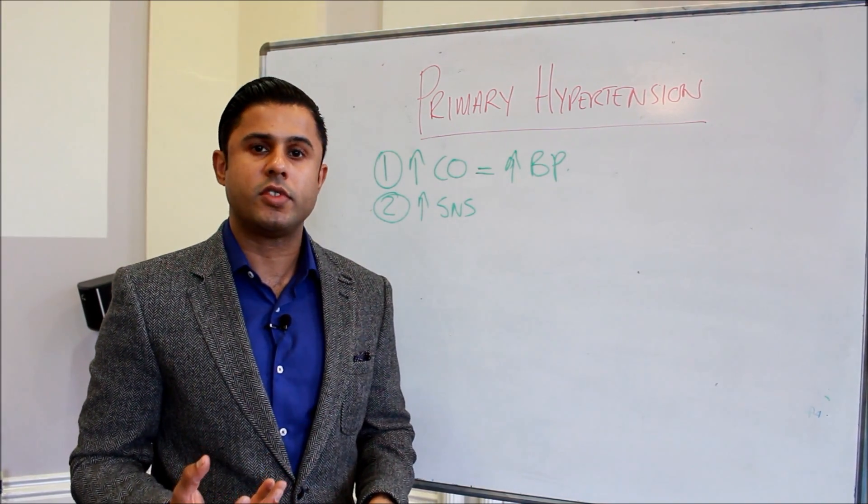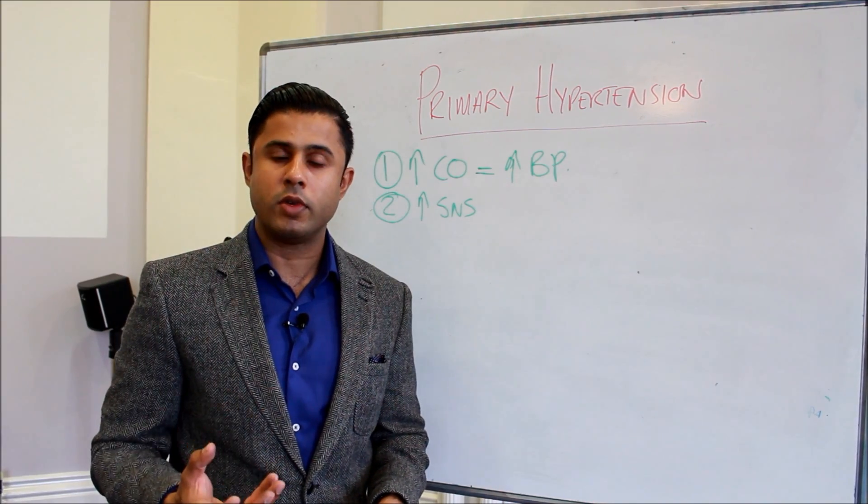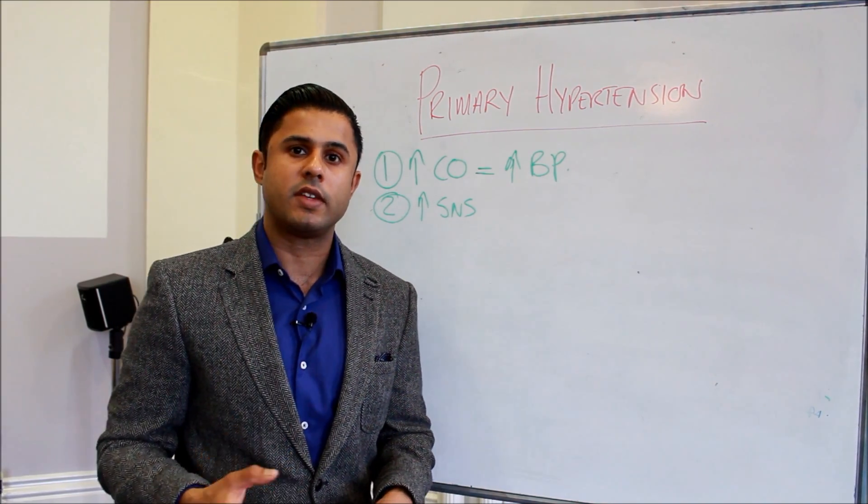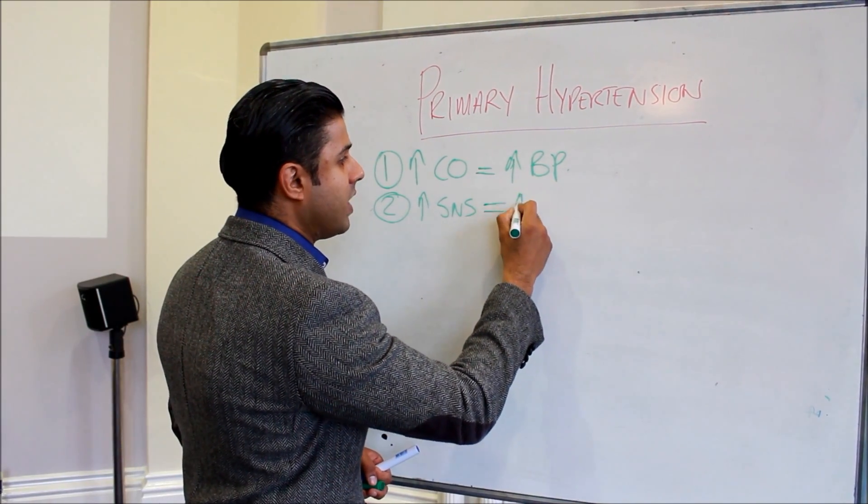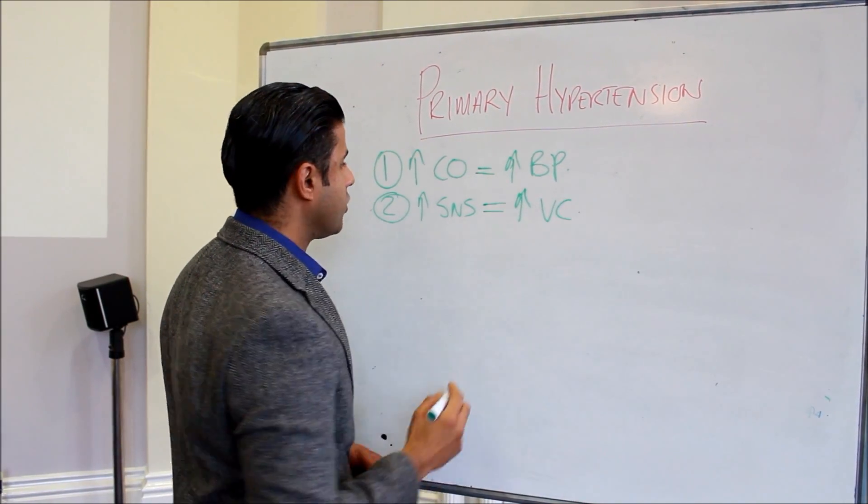There's also evidence to suggest that leptin, which is a hormone released by the adipocytes, may actually impact upon sympathetic nervous system activity and increase vasoconstriction.